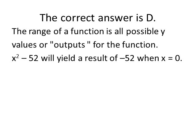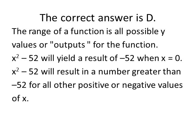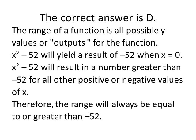If x is equal to 0, our equation is going to yield a result of negative 52. If we put in a positive number for x, we're going to get a result greater than negative 52. If we put in a negative value for x, we're also going to get a value greater than negative 52 because, as you know, a negative number squared is a positive number. So the correct answer here is D. The range will always be equal to or greater than negative 52.